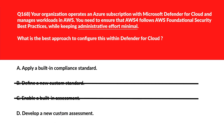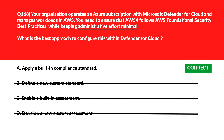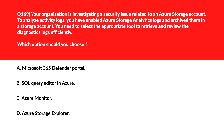Whenever you see 'custom,' think of it like reinventing the wheel — building your own factory to manufacture something that already exists. Custom assessments are a headache and increase administrative effort, so options B and D don't qualify. Option A is the right choice.